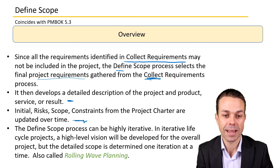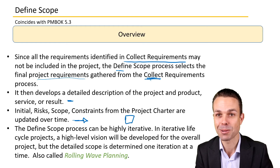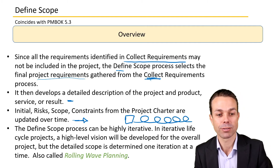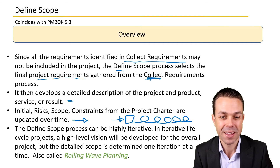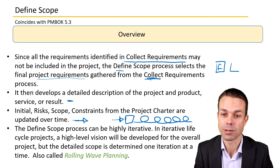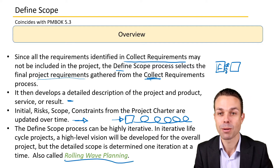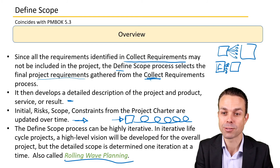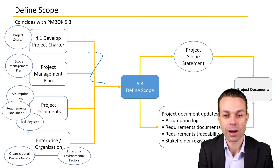Initial risks, scope, and constraints from the project charter are updated into our project management plan over time. The Define Scope process can be highly iterative — we might start with an idea in the project charter and iterate, adding to and improving it over time. In iterative lifecycle projects, a high-level vision is developed up front, representative of our project charter, and then the detailed scope is determined one iteration at a time. This is also called rolling wave planning, where we go into much more detail just before we're about to work on each feature — usually in two to four week iterations in an agile sense.